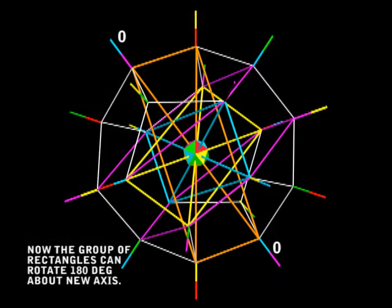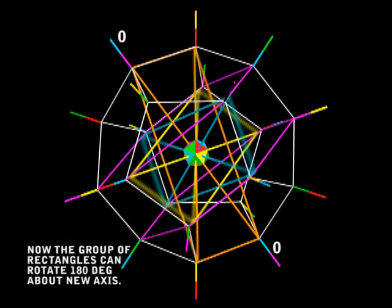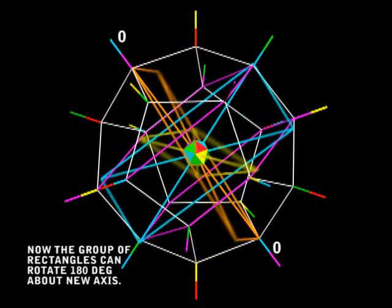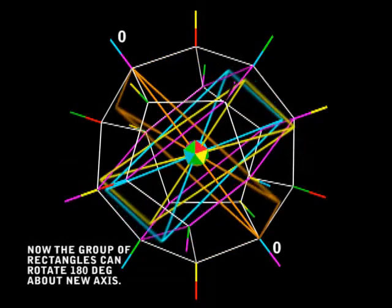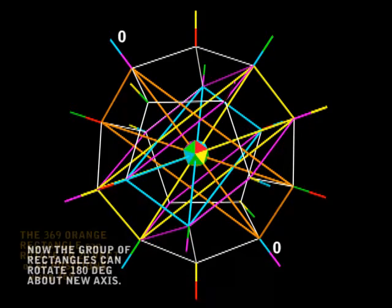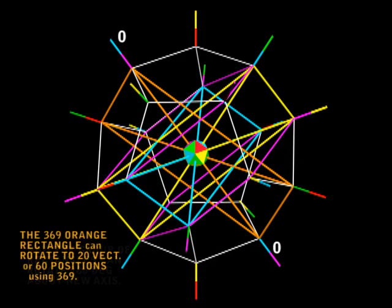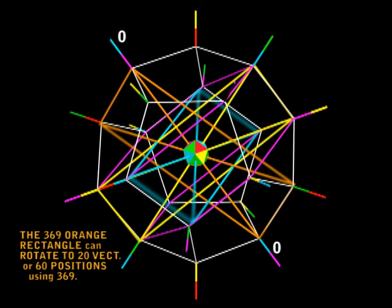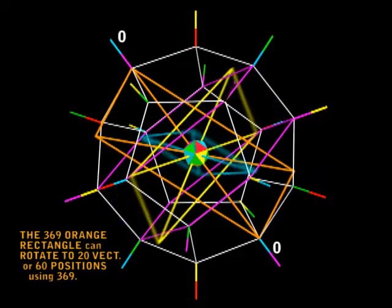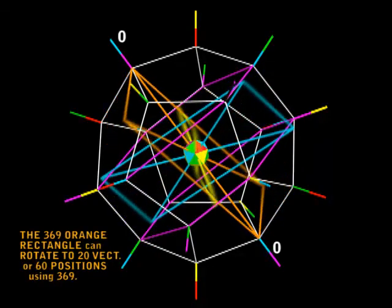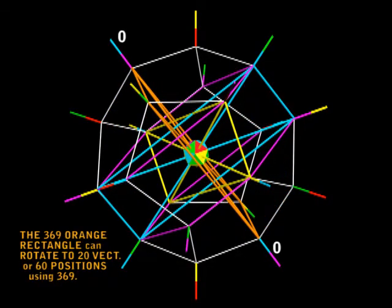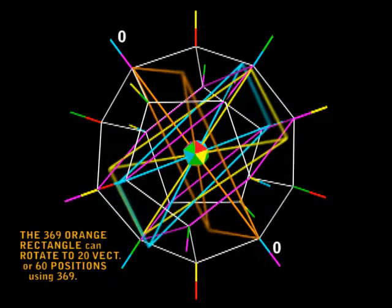Now this bend could be repeated to all 20 vectors. And each of the vectors have a choice of three — 3, 6, 9. I think it's plain to see that the dodeca is a wonderful 3D processor.